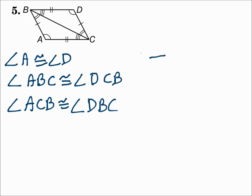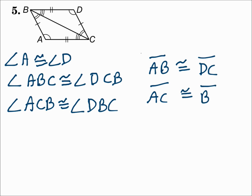For the segments, segment AB has one tick and is congruent to segment DC. Segment AC has two ticks and is congruent to segment BD with two ticks. And since they share side BC, side BC on the bottom triangle is congruent to side BC on the top triangle even though it's not marked — but we can still mark it, as it's congruent to itself.